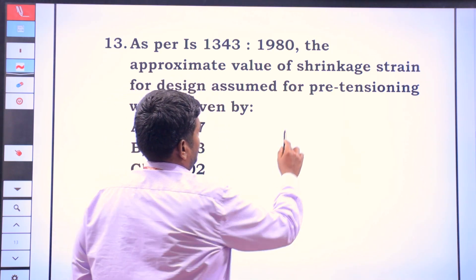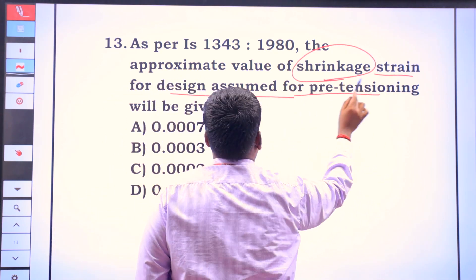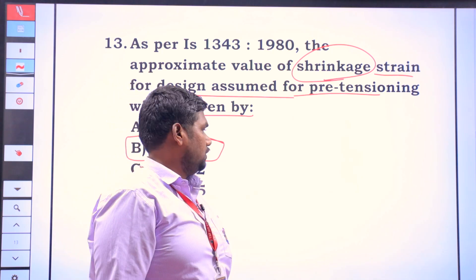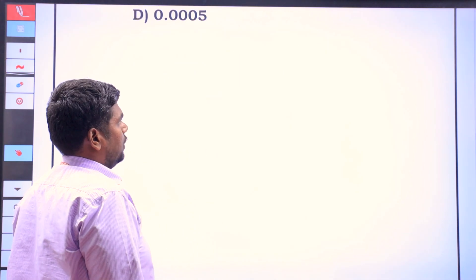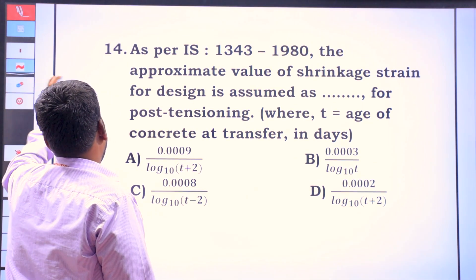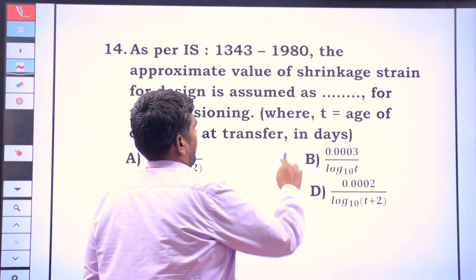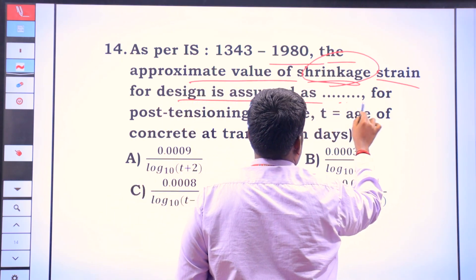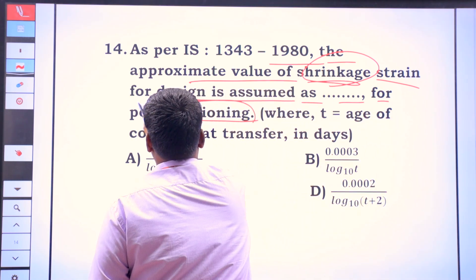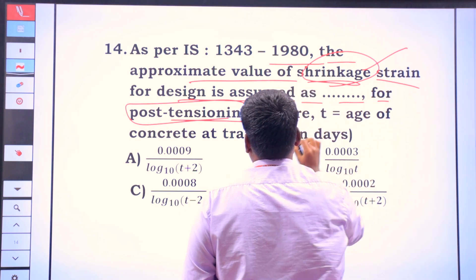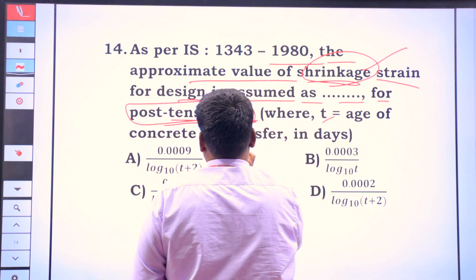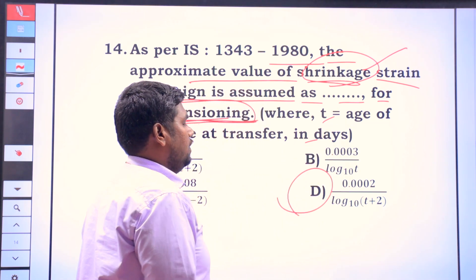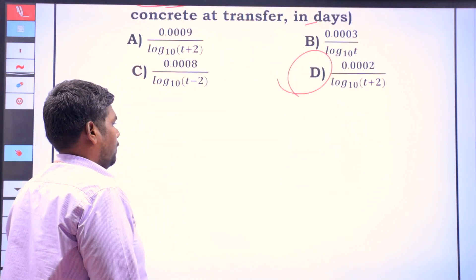As per IS 1343-1980, the appropriate value of the shrinkage strain for design assumed for pre-tensioning is 0.0003. For post-tensioning, the shrinkage strain formula is 0.0002 × log₁₀(t + 2), where t is the age of the concrete in days. Let's verify this in the code book.